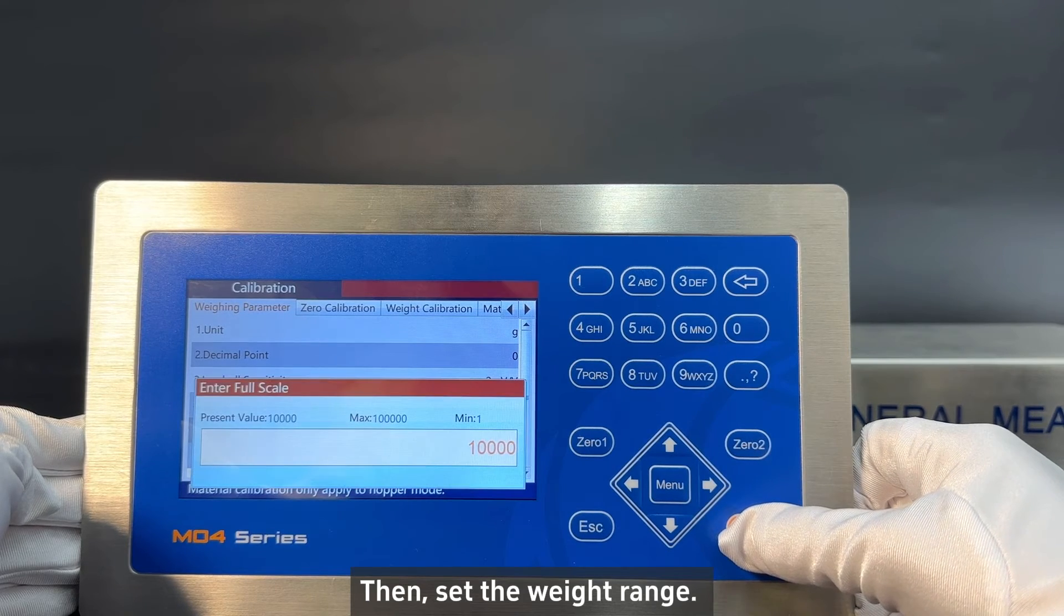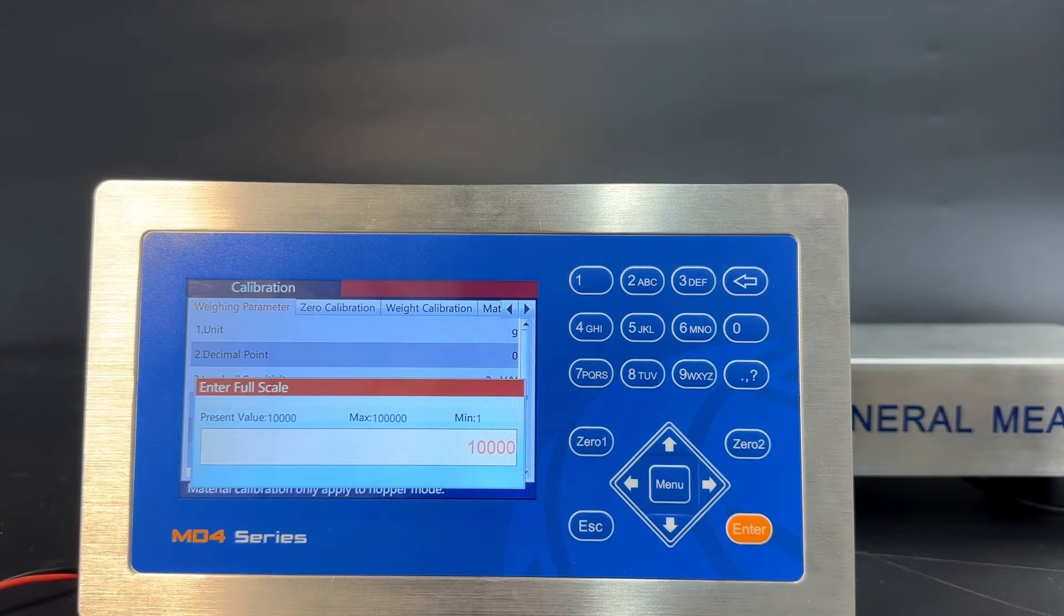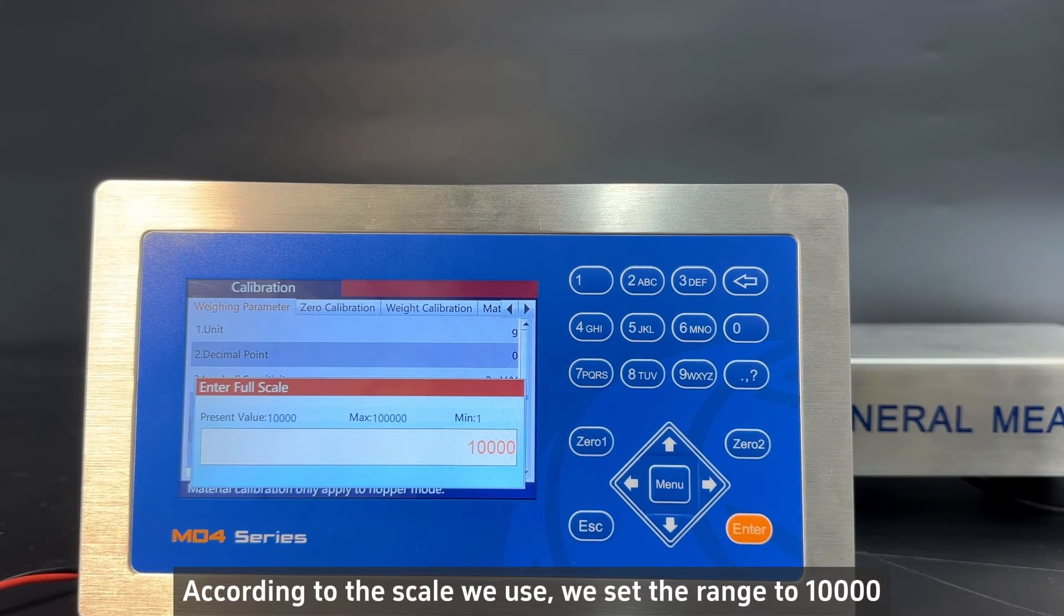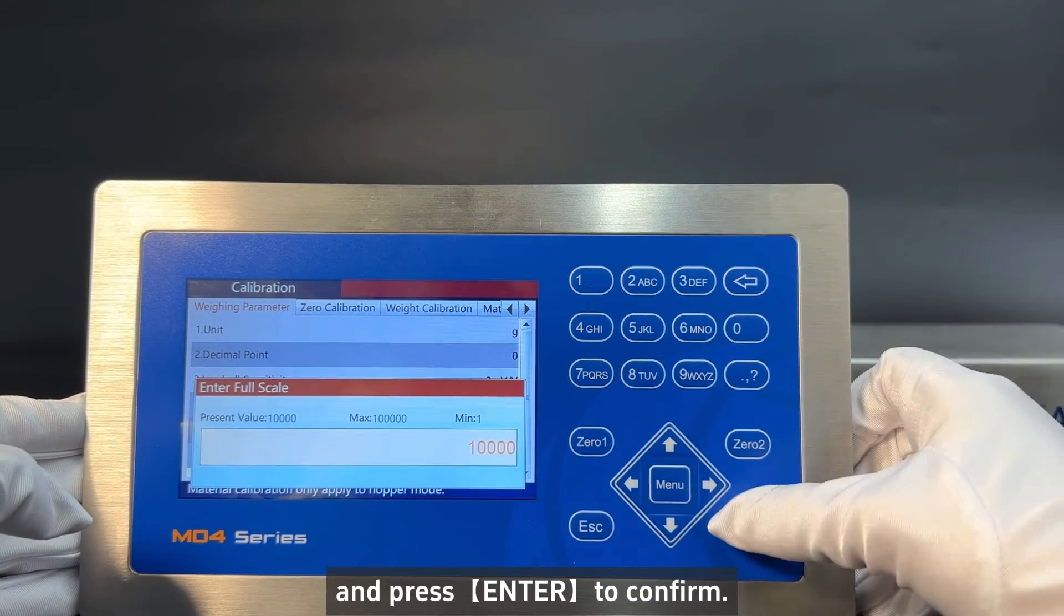Then set the weight range. Generally, we set it as the maximum weight of the load cell. According to the scale we use, we set the range to 10,000. And press enter to confirm.